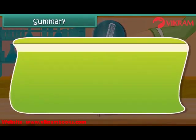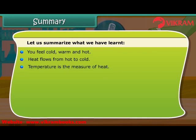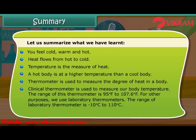Summary. Let us summarize what we have learnt: you feel cold, warm and hot; heat flows from hot to cold; temperature is the measure of heat; a hot body is at a higher temperature than a cool body; a thermometer is used to measure the degree of heat in a body; a clinical thermometer is used to measure body temperature, with a range of 95 degrees Fahrenheit to 107.6 degrees Fahrenheit; for other purposes, we use laboratory thermometers, with a range of minus 10 degrees Celsius to 110 degrees Celsius; the normal temperature of the human body is 98.6 degrees Fahrenheit.